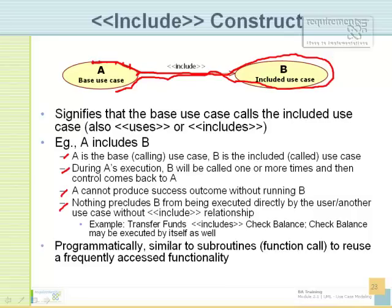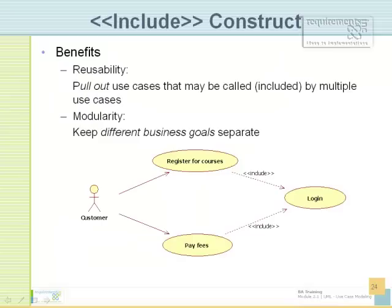A good example is make payment. You might make payment because you are buying a subscription, purchasing a product, or renewing your subscription. So make payment can be called by different use cases — that's very typical and a good reason to have include in the first place. The benefits are reusability — if you pull it out, multiple use cases can access it. The second benefit is keeping different goals separately, so you don't have to deal with too many things in one use case — it simplifies it and you can still achieve both by calling the second use case.